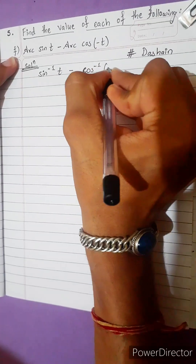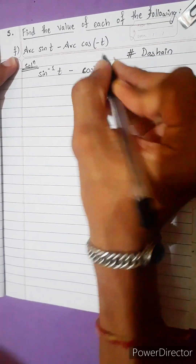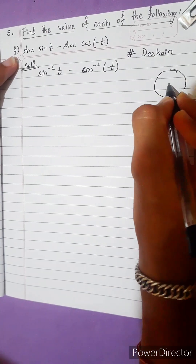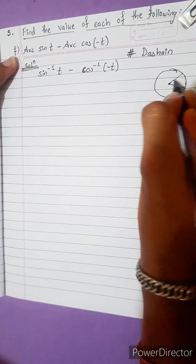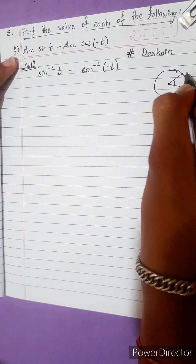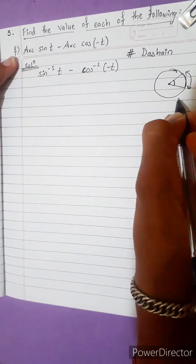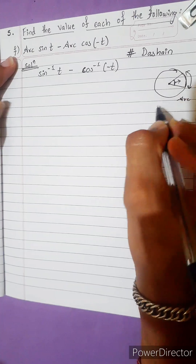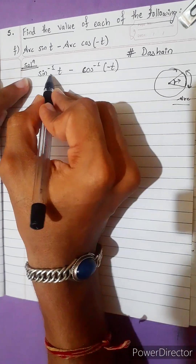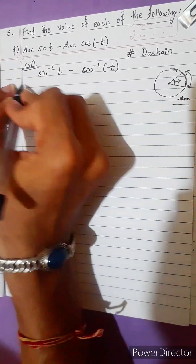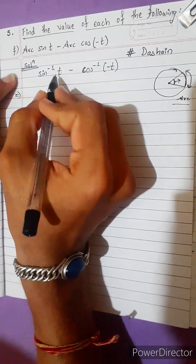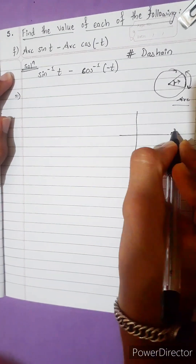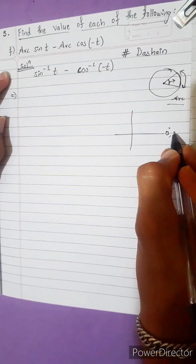Now, cos inverse(-t). The arc is inverse of minus t. Suppose this is a circle — the chapter radius, this angle can be opposite. It is always opposite of angle. So the opposite of angle is arc, and sine inverse is also arc. This is equal to 0 degrees and 360 degrees.